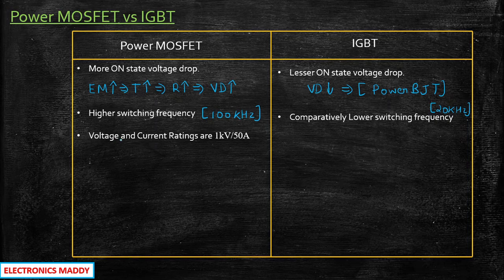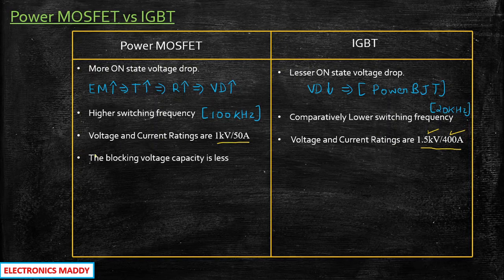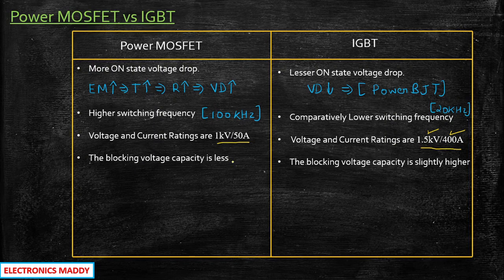The next important point is the voltage and current rating of MOSFET, which is 1 kilovolt and 50 amperes — please make a note of this. Whereas the voltage and current rating of an IGBT is 1.5 kilovolts and 400 amperes, meaning it is used for much higher voltage and current ratings. The blocking voltage capacity is comparatively lesser in power MOSFET, whereas it is slightly higher in IGBT.